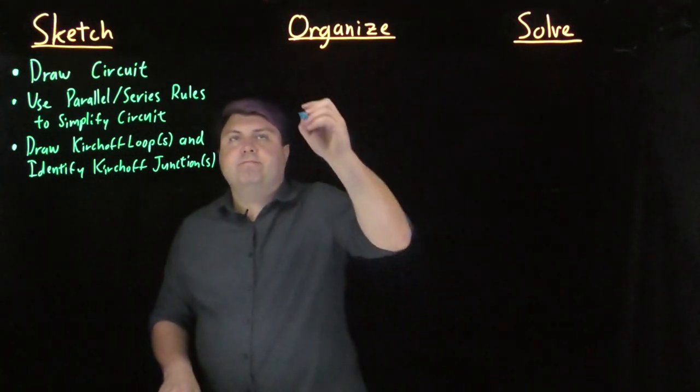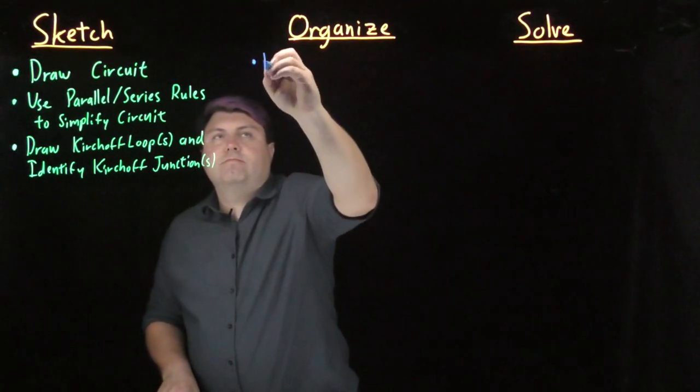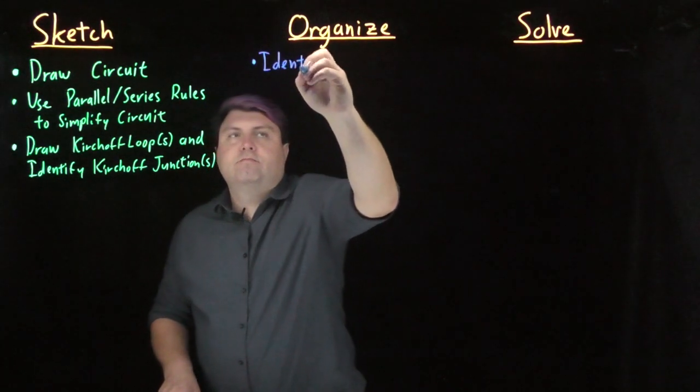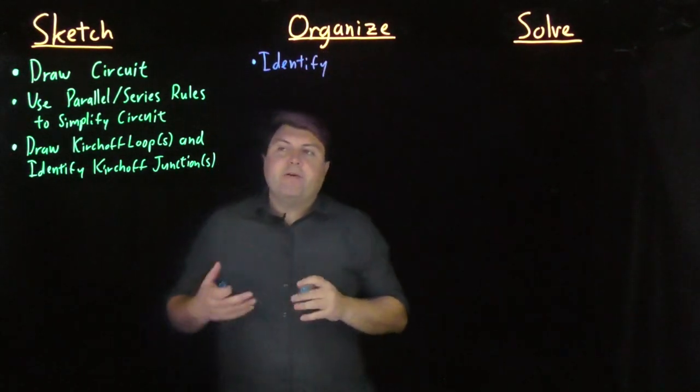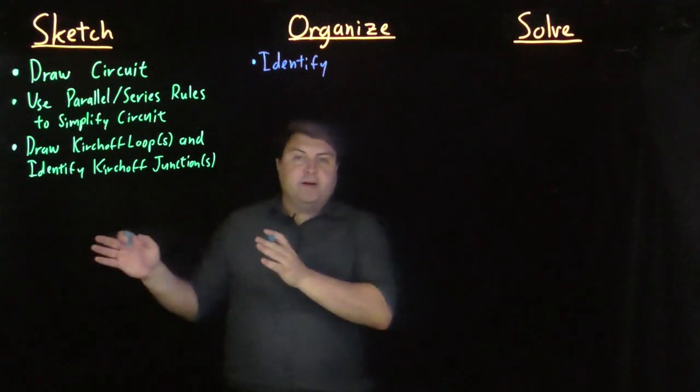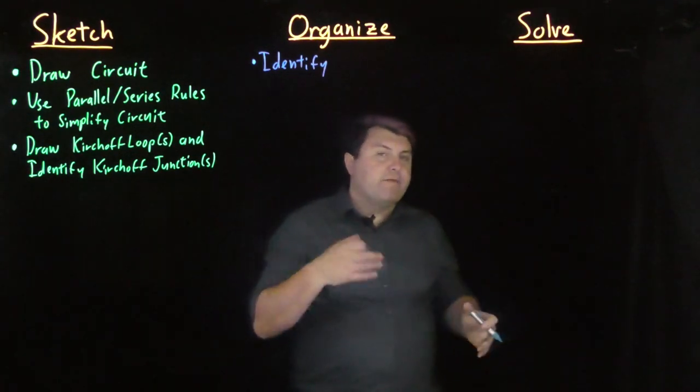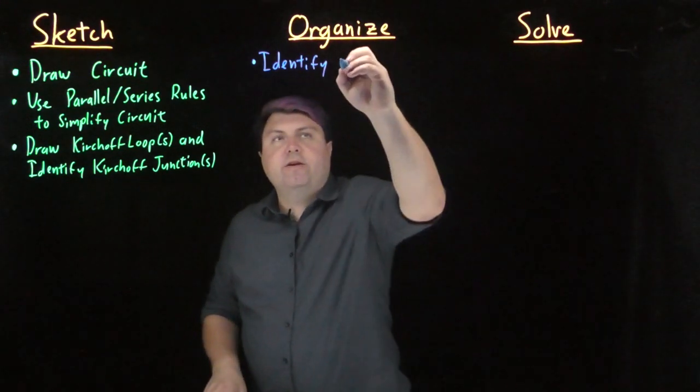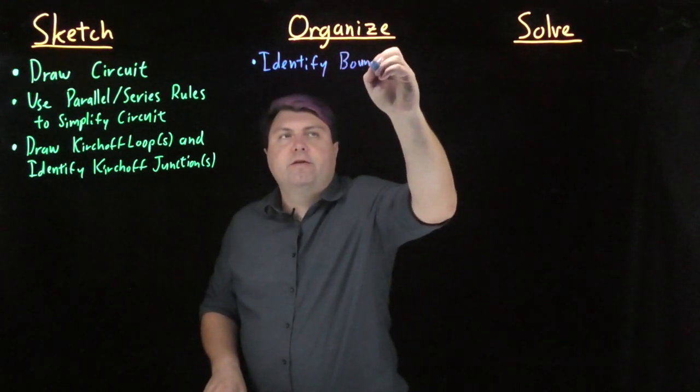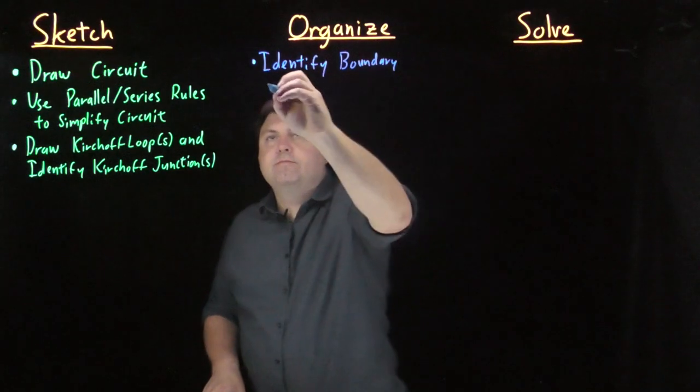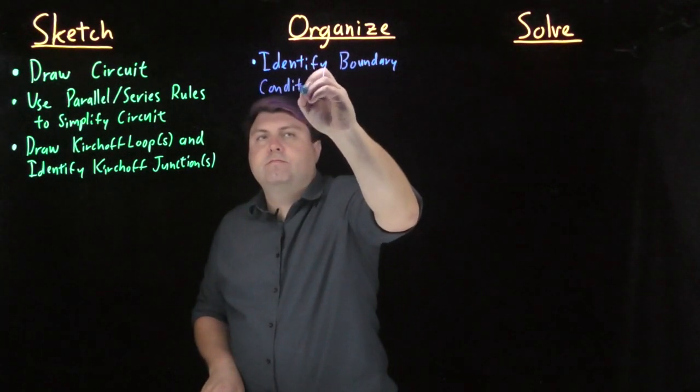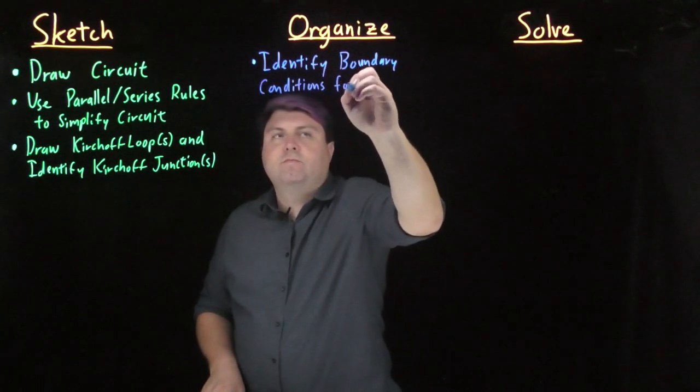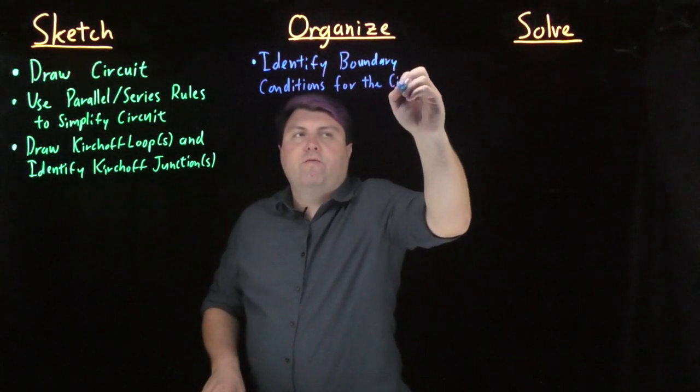Now in our organize step we want to see if we know anything about the circuit either at the very beginning or the very end, right when the switch has just turned on or all the way at the end. And these are called boundary conditions for our circuit.